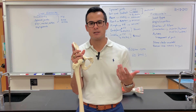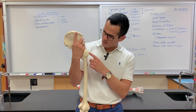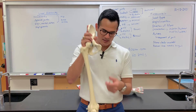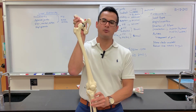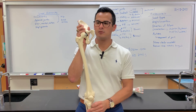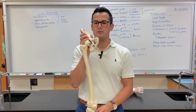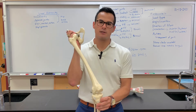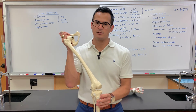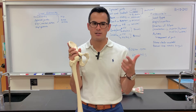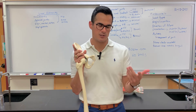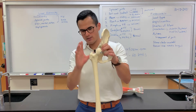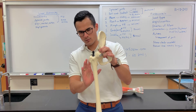The last adductor is the gracilis, which originates on the inferior pubic ramus and inserts at the proximal medial tibia — making it the most medial muscle. Three muscles attach at the proximal medial tibia: just remember SGT — the sartorius, the gracilis, and the semitendinosus, which is one of the medial hamstrings.